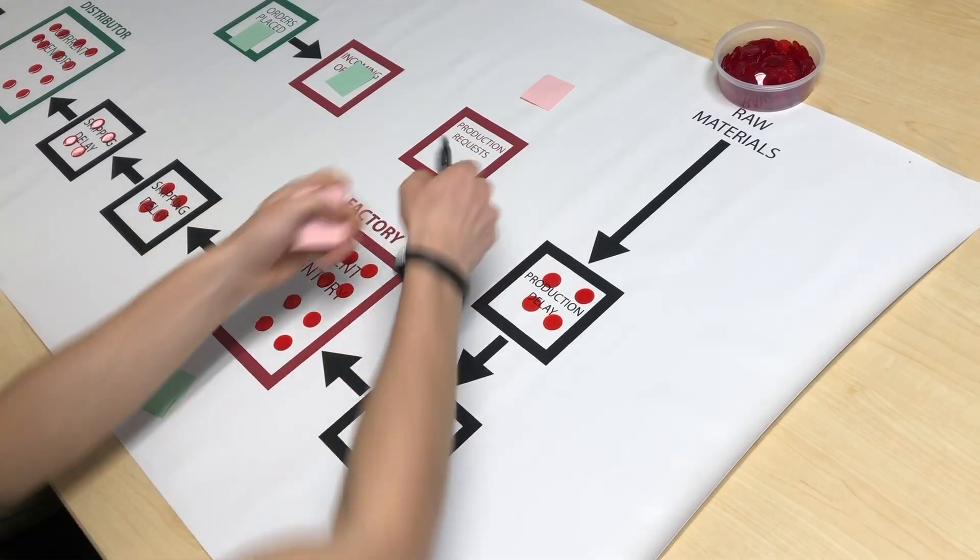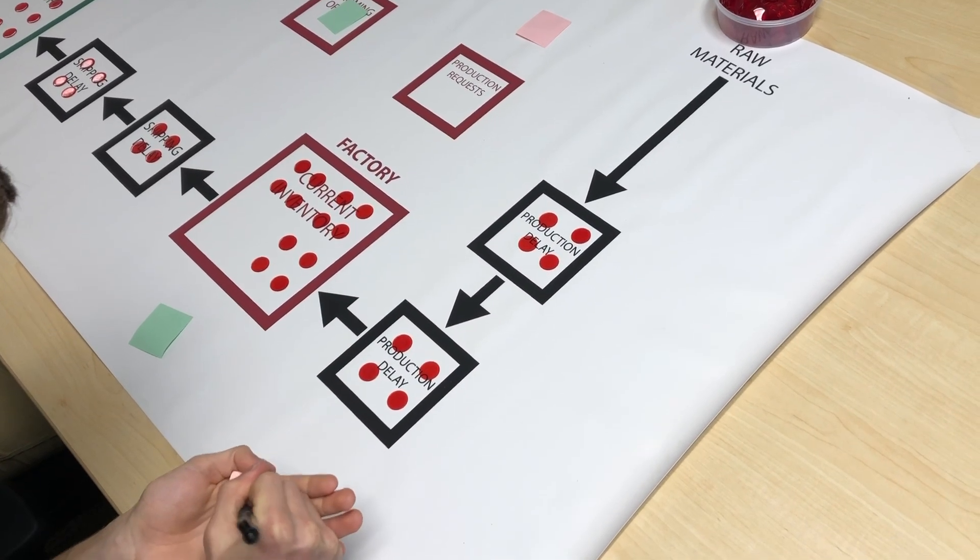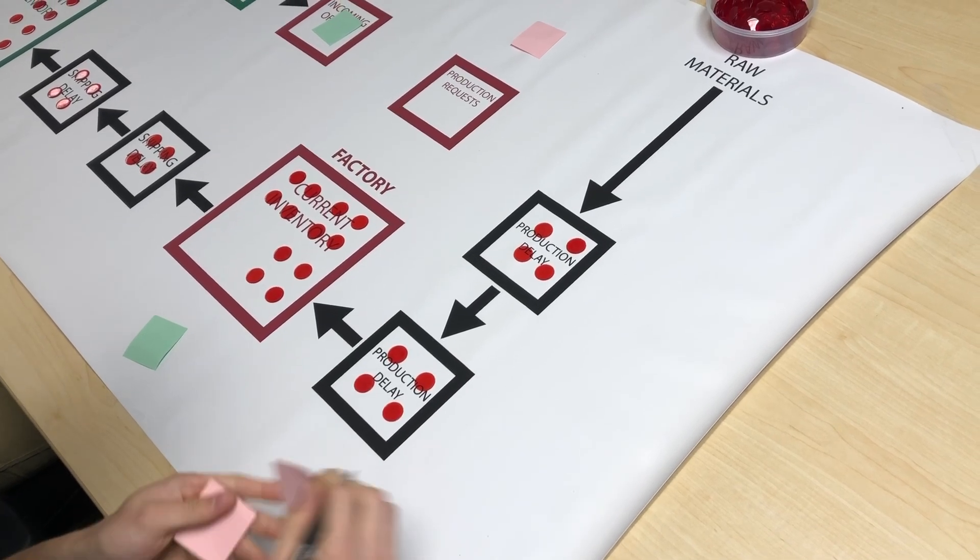To place orders, the factory writes their desired number of cases on a slip and places it in their production requests box.